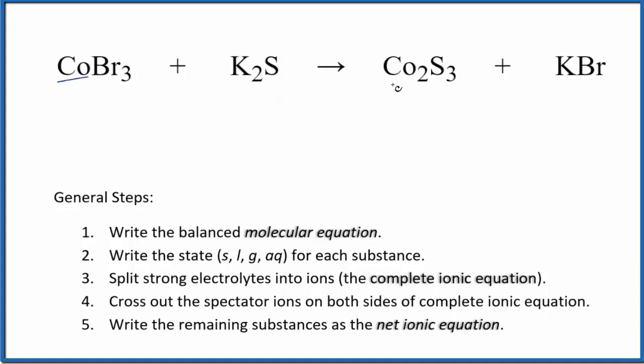I can see that I have one cobalt here and two here, so I'm going to put a 2 in front of the cobalt(III) bromide. Now I have six bromines, got to put a 6 over here. That balances the bromines. Six potassiums, put a 3 here. Now we have six potassiums, three sulfurs, three sulfurs. We're done. That's the balanced molecular equation.